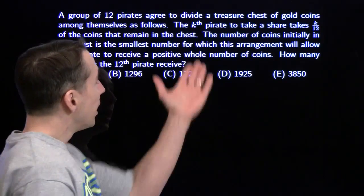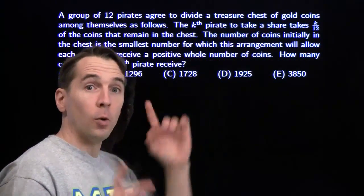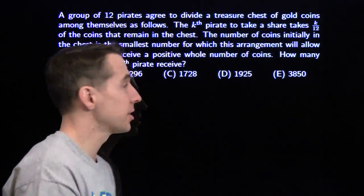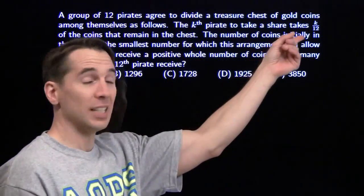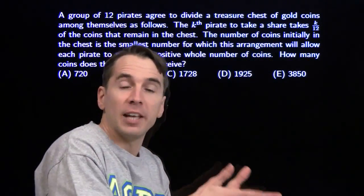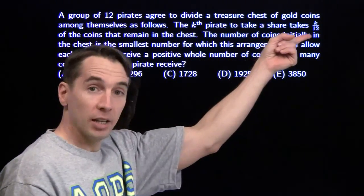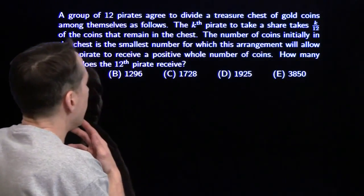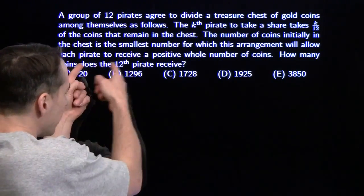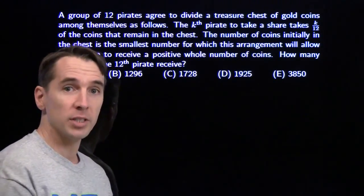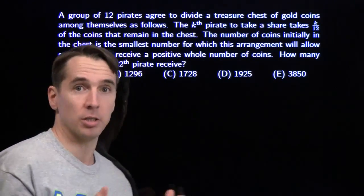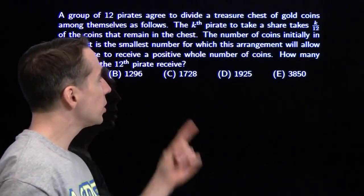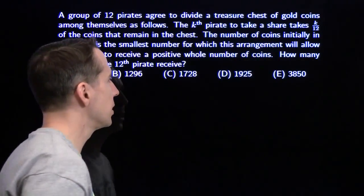What we've got here are 12 pirates. They're going to divide up a treasure chest of gold. The first pirate takes 1/12 of the gold in the chest. The second pirate takes 2/12 of whatever's left after the first pirate. The third pirate takes 3/12 of whatever's left after the second pirate, and on and on. Each pirate gets a positive whole number of coins, and the number of coins in the chest is the smallest number for which this is possible.